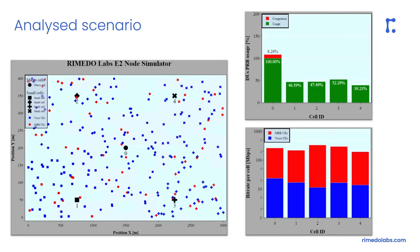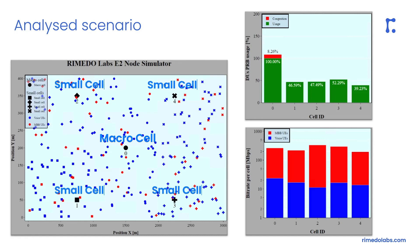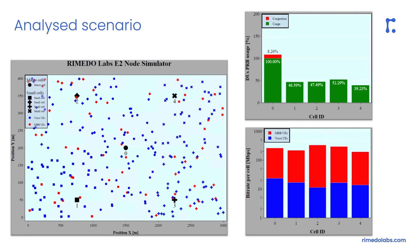In this work, we consider a network deployed over some area with five cells and randomly distributed users of two traffic types. A coverage cell is located in the center and four capacity cells are located near the corners of the area. We can observe physical resource block usage as a percentage for each cell and additionally the cumulative bit rate achieved in each cell.